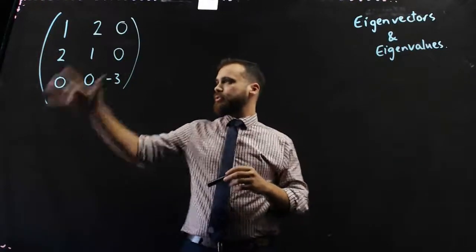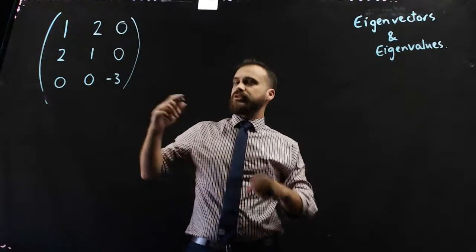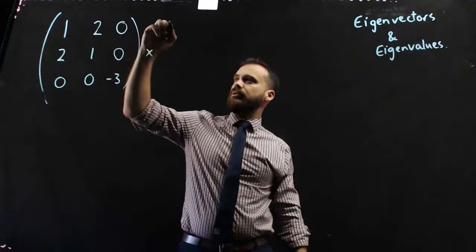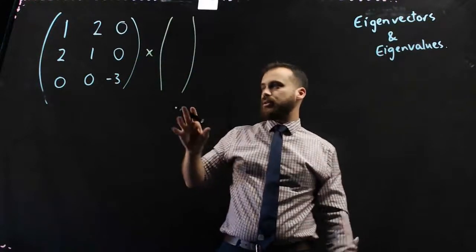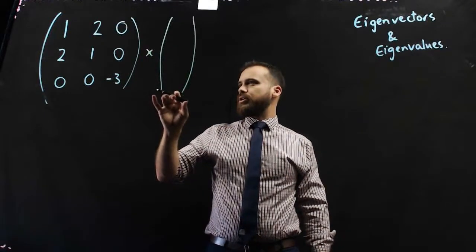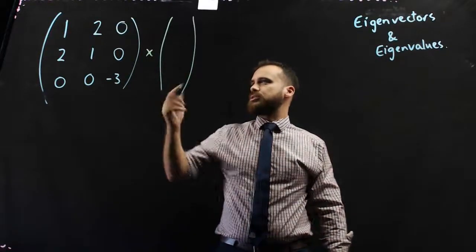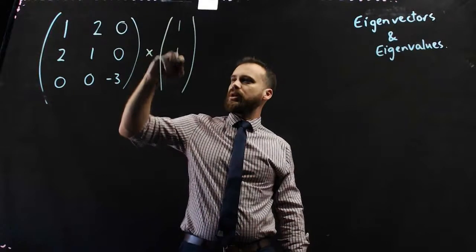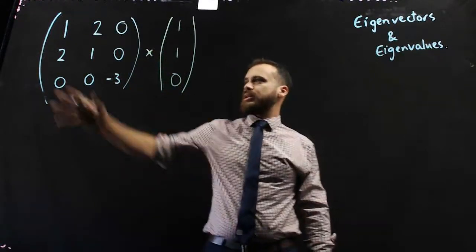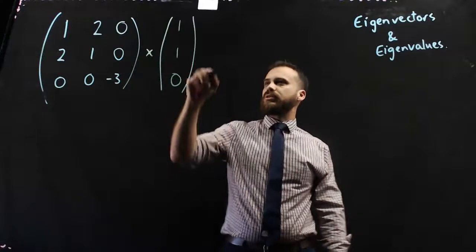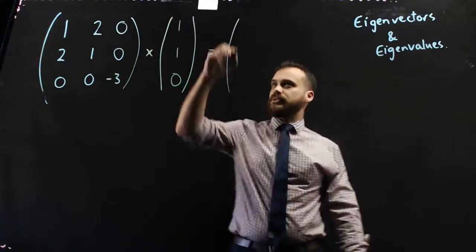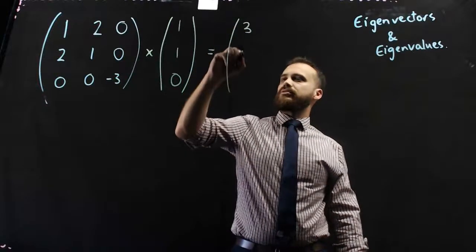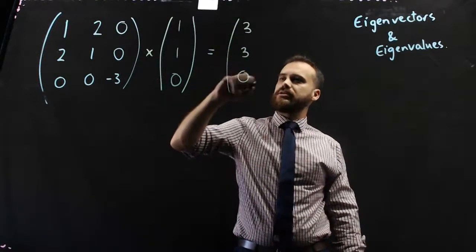All right, so I've got this matrix here, and I'm going to multiply it by a 3 by 1. So, I'm going to use the matrix 1, 1, 0. So, when I take that matrix and multiply it by 1, 1, 0, I'm going to get, I've already done this, don't worry, I'm not doing that in my head, 3, 3, 0.